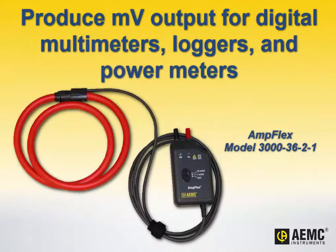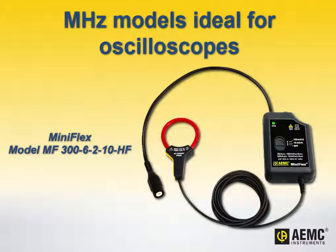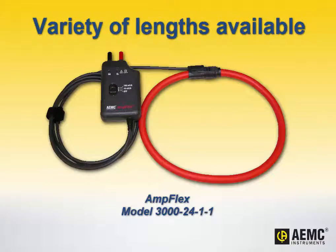These probes produce a millivolt output proportional to the current measured for direct readings on digital multimeters, loggers, and power meters. Models specifically designed with a 1 MHz bandwidth are ideal for oscilloscopes, and the probes come in a variety of lengths.